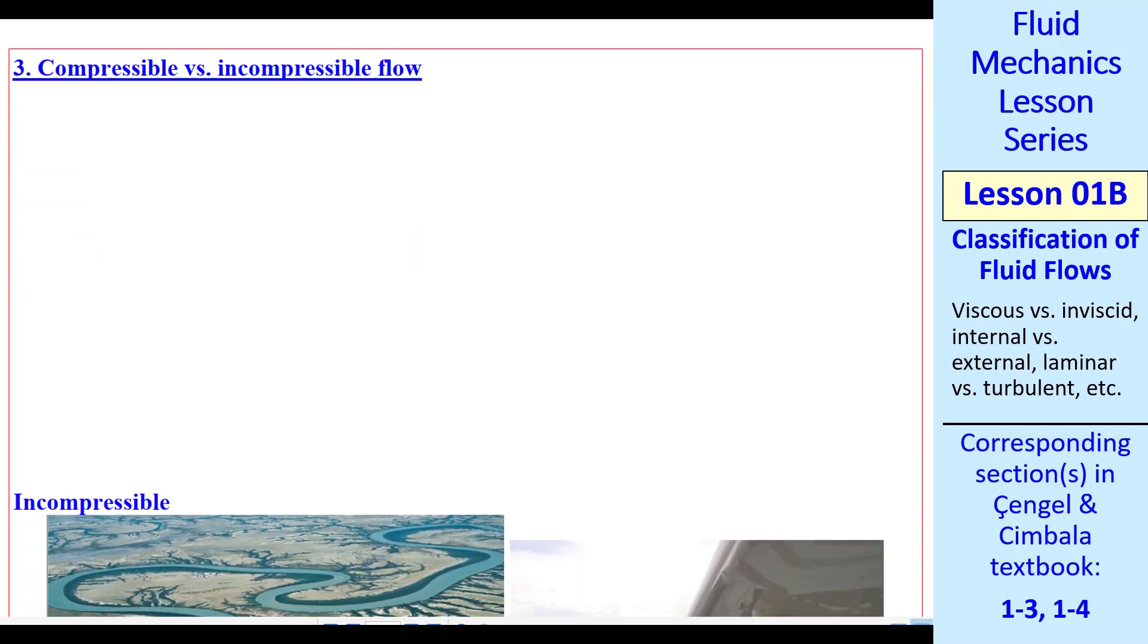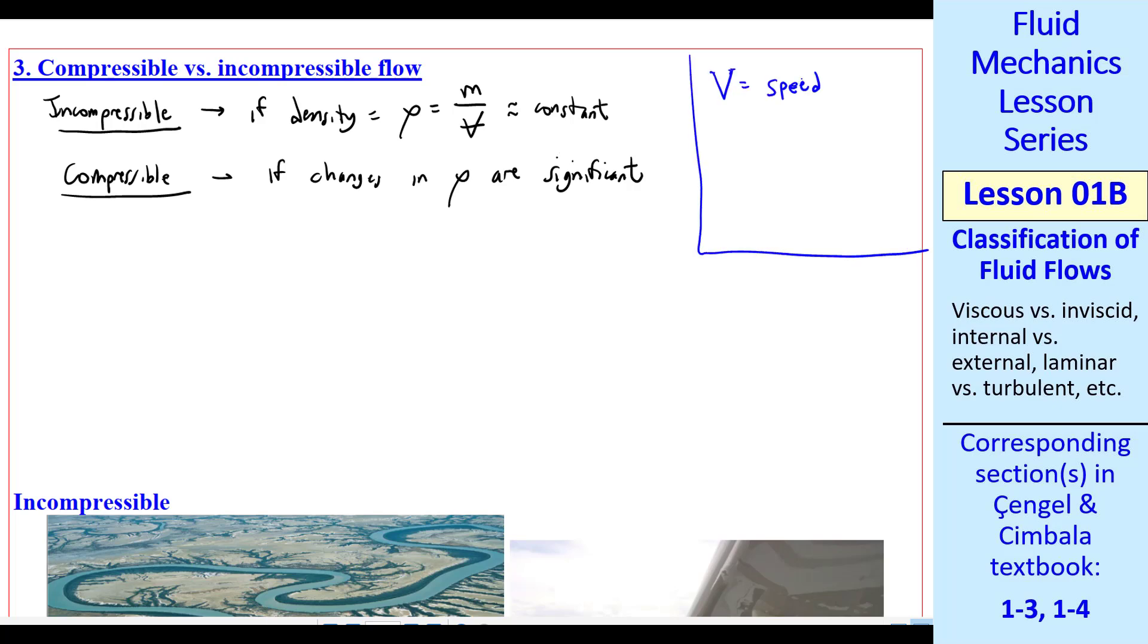Next, we'll talk about compressible versus incompressible flow. If the density, which we use the symbol rho, which is mass over volume of the fluid, is approximately constant, we call that incompressible. We call it compressible if changes in density are significant. I want to comment here about my notation. When I have a capital V like that, that means speed. If you put an arrow over it, it means velocity, which is speed along with the direction. It's a vector. I draw V with a line through it to mean volume. So you'll see this notation when I write things out to mean volume. In the textbook, there's kind of a script-looking different font for V as volume compared to speed. So you just have to get used to that in the book.